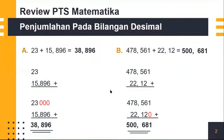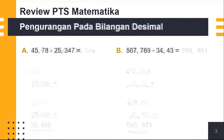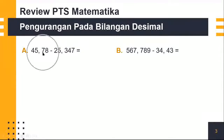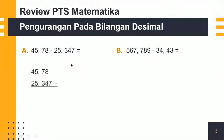Berikutnya kita lanjut ke pengurangan pada bilangan desimal. Saya kasih dua contoh soal untuk pengurangan. Di contoh soal A, misalnya 45,78 kurang 25,374. Untuk menyelesaikannya kita harus susun ke bawah dulu. Ingat anak-anak, seperti yang saya bilang, untuk pengurangan itu sama dengan penjumlahannya. Intinya adalah kita harus susun dulu sejajar — komanya harus disusun sejajar.